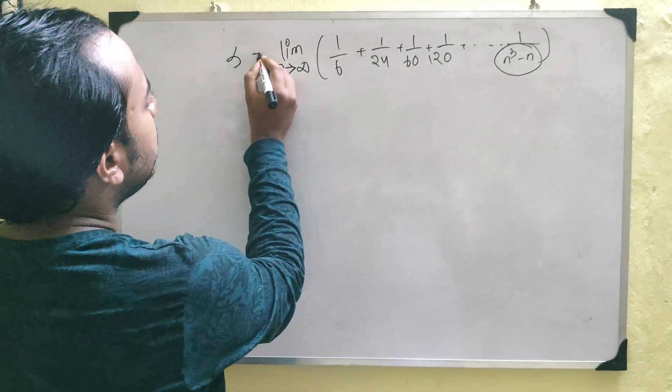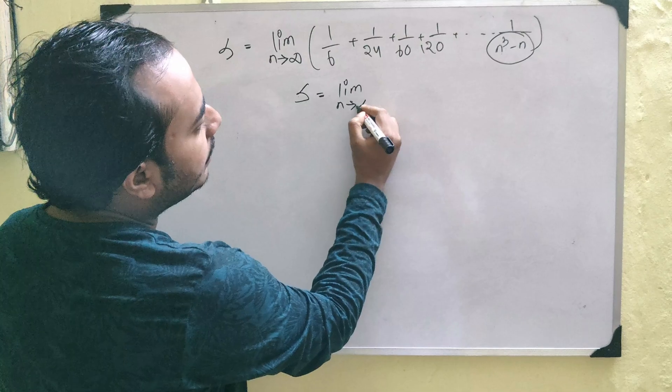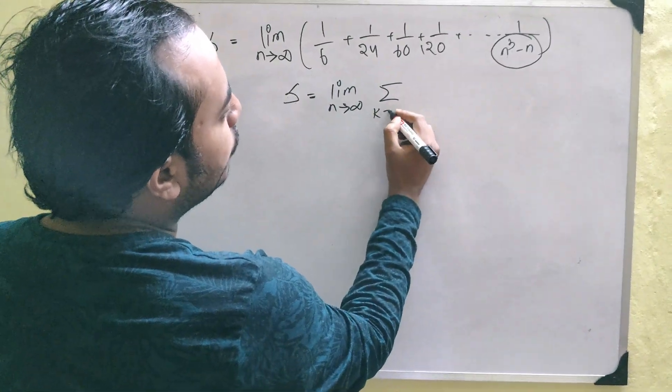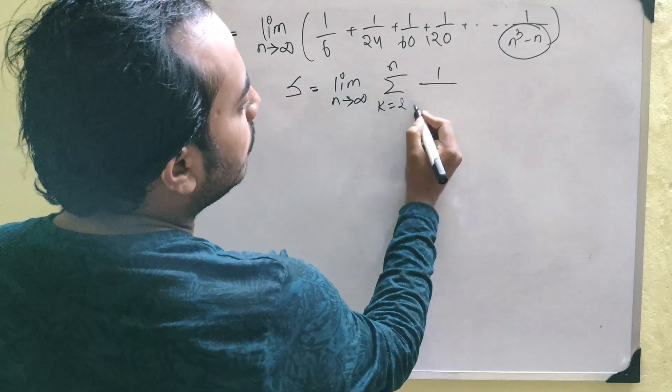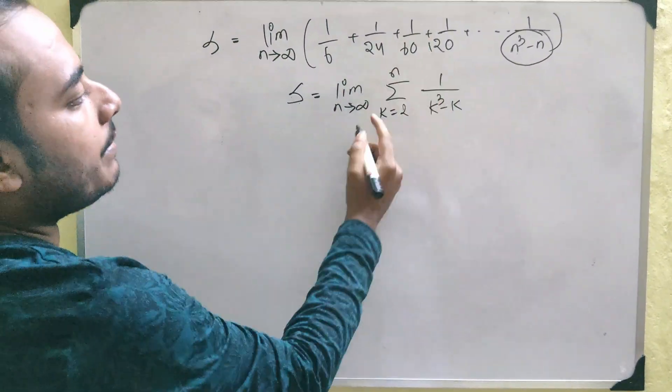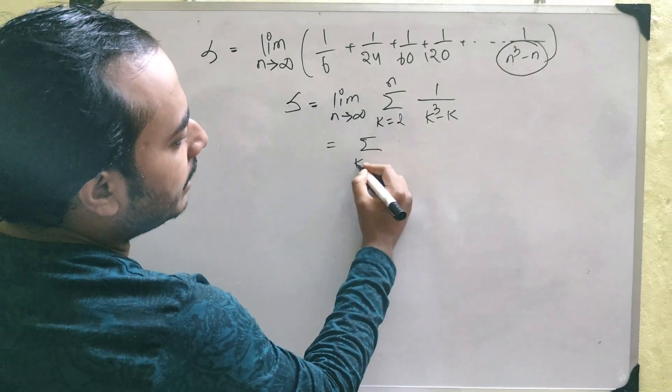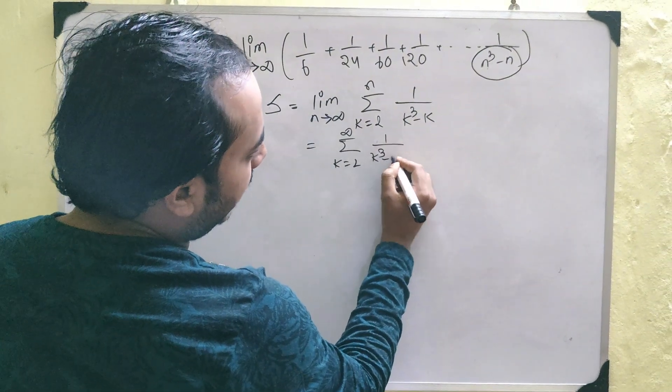Let this be S and you can write S equals to simply limit n tends to infinity summation k equals to 1 to n. Now, the general term is actually it will start from 2 k cube minus k and you can simply put this limit here and you can say that this is nothing but k equals to 2 to infinity 1 by k cube minus k.